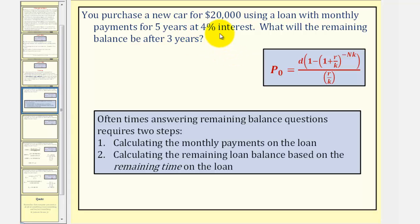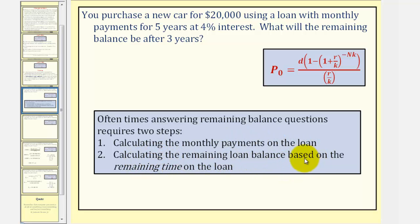When answering this type of problem, there are two steps. Number one, we calculate the monthly payments on the loan. And then two, we calculate the remaining loan balance based on the remaining time of the loan.